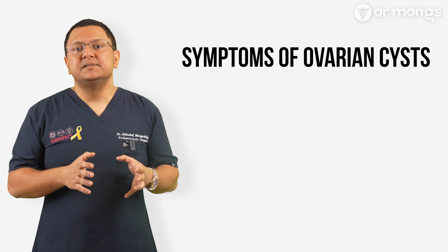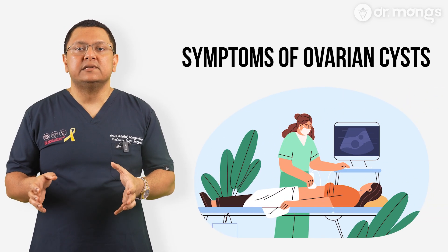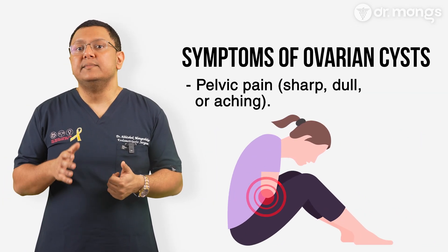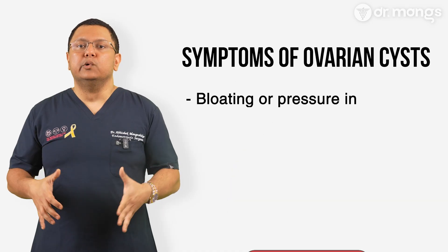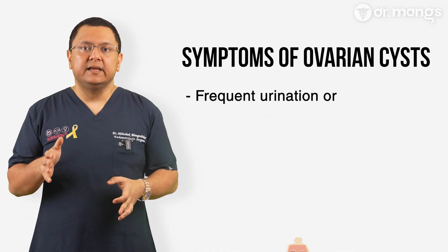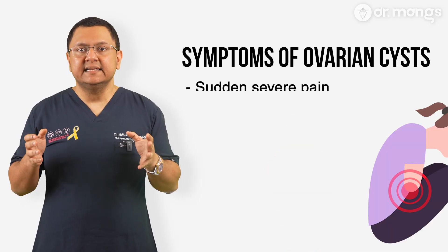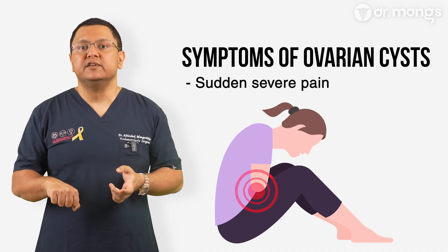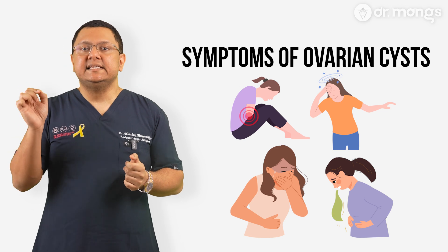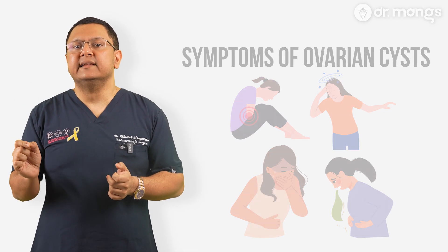Many ovarian cysts don't cause symptoms and are only found during routine pelvic exams or ultrasounds. However, if a cyst grows large, ruptures, or causes ovarian torsion, symptoms can include pelvic pain that may be sharp, dull, or aching, bloating or pressure on the abdomen, painful periods or irregular cycles, pain during intercourse, and frequent urination or bowel discomfort if the cyst presses on the bladder or intestines. Sudden severe pain could indicate a rupture or torsion. If you experience sudden severe pelvic pain, dizziness, nausea, or vomiting, seek immediate medical attention, as this could indicate a ruptured cyst, ovarian torsion, or a malignancy.